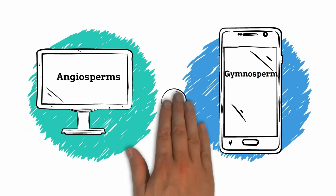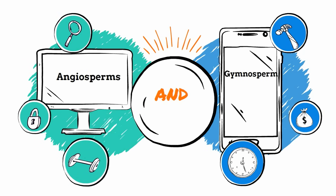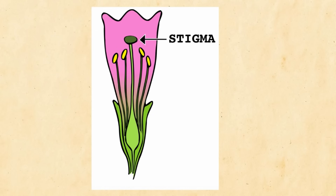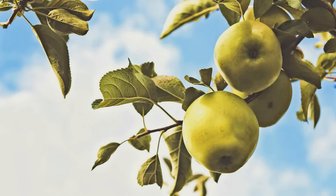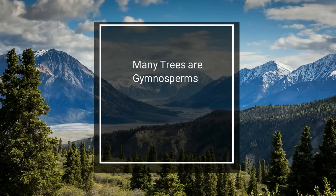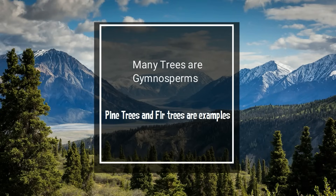You can also classify plants by whether they have flowers or not. Angiosperms are plants that have flowers. They contain a carpel that has a stigma, style, and ovary, which is used in reproduction. Most of our vegetables and fruits are angiosperms. Gymnosperms do not have flowers, and they rely on airborne pollen to reproduce. Many of our trees, like pine and fir trees, are gymnosperms.